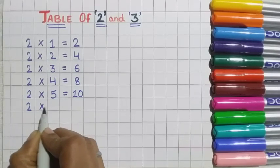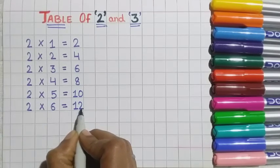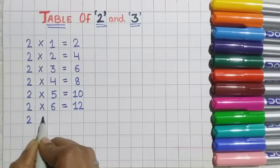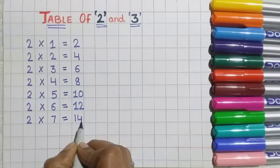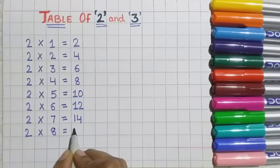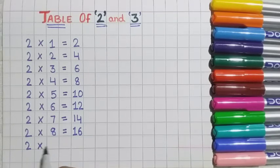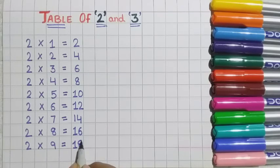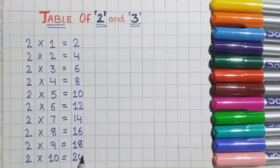Two 6s are 12. Two 7s are 14. Two 8s are 16. Two 9s are 18. Two 10s are 20.